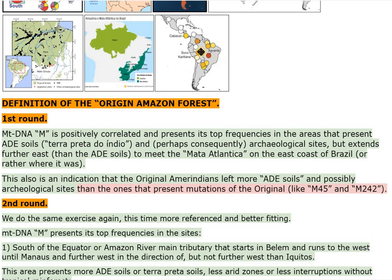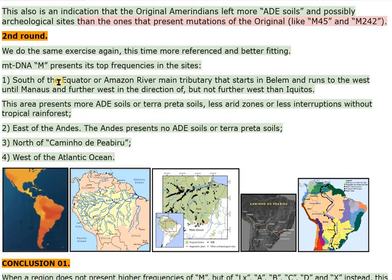Second round — we do the same exercise again, this time more referenced and better fitting. MtDNA-M presents its top frequencies in the sites: 1. South of the equator or Amazon River main tributary that starts in Belém and runs to the west until Manaus and further west, but not further west than Iquitos. This area presents more ADE soils or Terra Preta soils, and less arid zones or less interruptions without tropical rainforest. 2. East of the Andes. The Andes presents no ADE soils or Terra Preta soils.